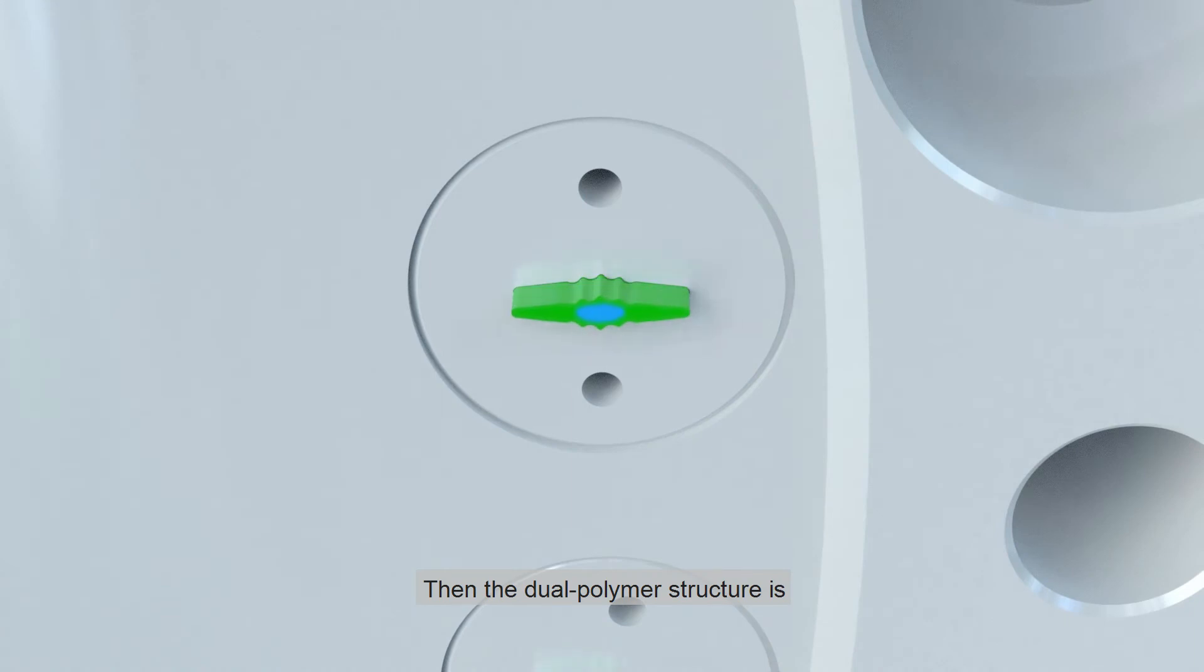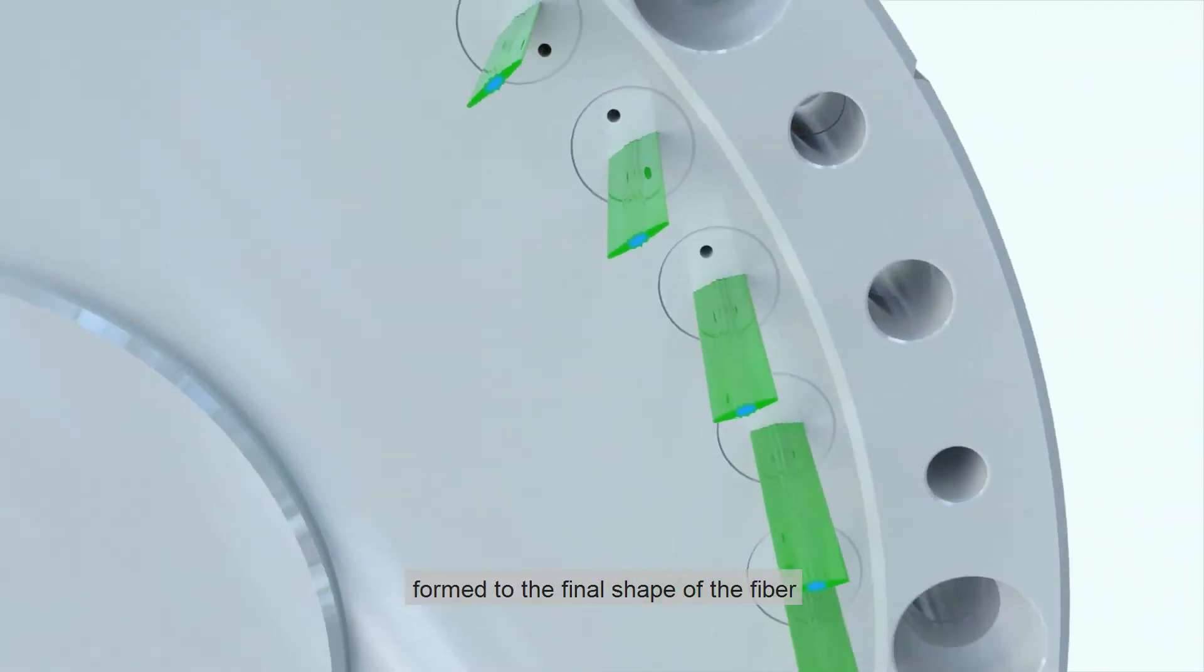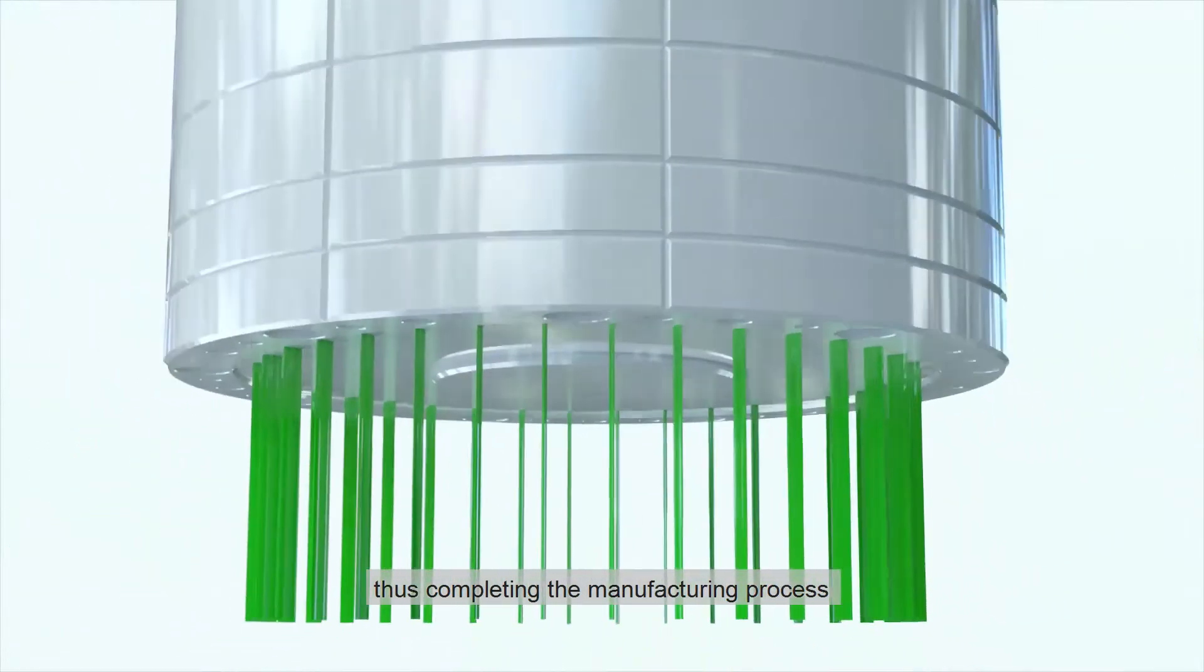Then, the dual polymer structure is formed to the final shape of the fiber, thus completing the manufacturing process.